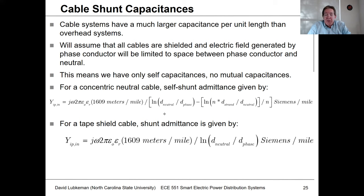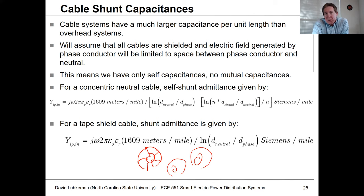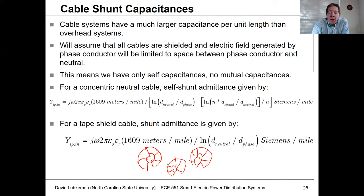For a concentric neutral cable system, the equation gets more complicated. We assume that if you have a multi-cable system with a neutral wrapped around the phase conductor, the electric field is confined within each cable. This means there is no cross-coupling between cables — only a self-capacitance associated with each cable's phase conductor and its neutral.